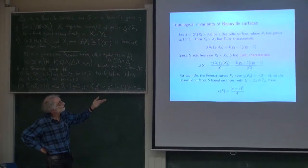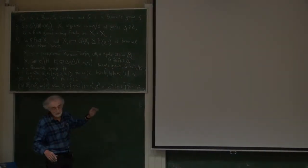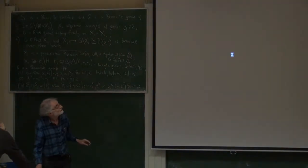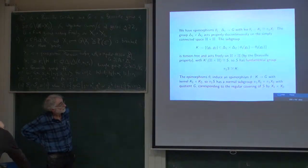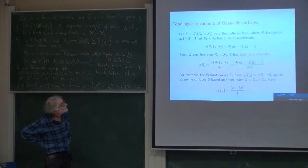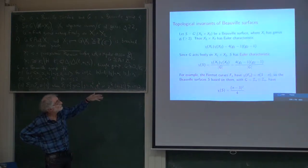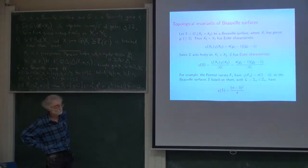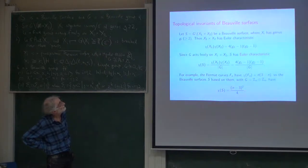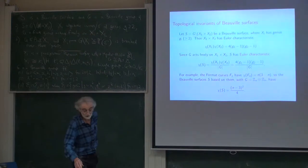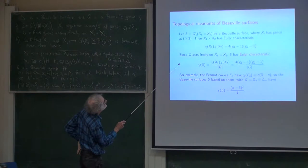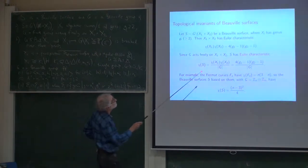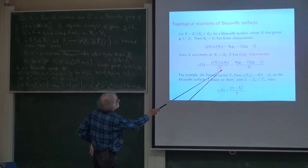The Euler characteristic behaves in very nice ways. For instance, the Euler characteristic of a product is the product of the Euler characteristics. And if you factor out a group acting freely, you simply divide by the order of the group. So you can write down the Euler characteristic of a Beauville surface — just take the product of the Euler characteristics of the two algebraic curves, or Riemann surfaces, and divide by the order of the group. Because a surface of genus g has Euler characteristic 2−2g, the product has that characteristic, and you simply divide by the group order.